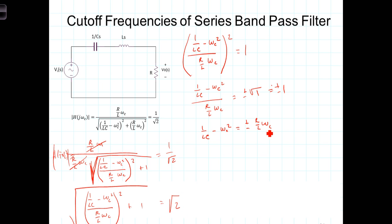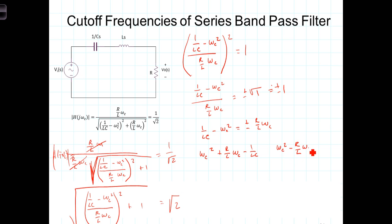So we thus have two equations. The first equation is: omega sub c squared plus R over L times omega sub c minus 1 over LC equals 0. The second equation is: omega sub c squared minus R over L times omega sub c minus 1 over LC equals 0. One equation corresponds to the positive case and the other to the negative case.